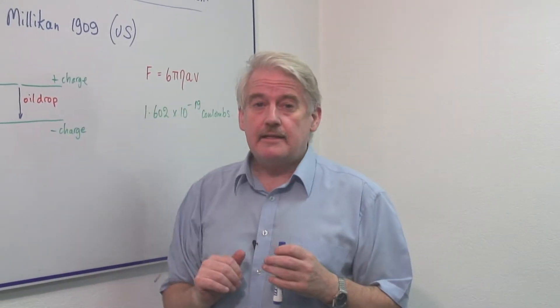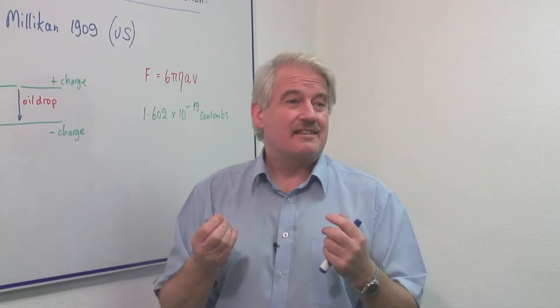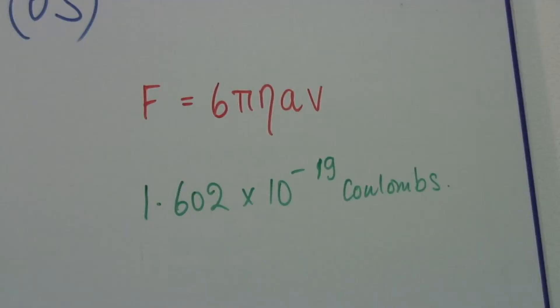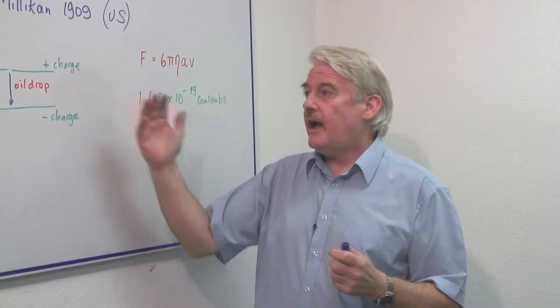So what he did in this experiment, he enabled scientists to get a very fundamental value. The value eventually was worked out to be 1.602 times 10 to the minus 19 coulombs. It doesn't really matter what the value was. But how did he do it?